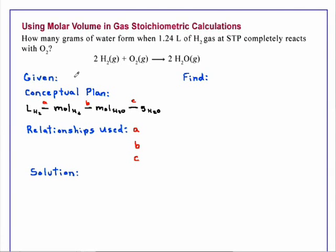Using molar volume in gas stoichiometric calculations, how many grams of water form when 1.24 liters of hydrogen gas at STP completely reacts with oxygen?